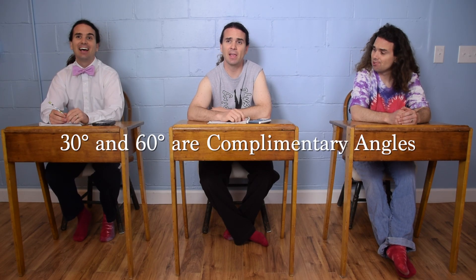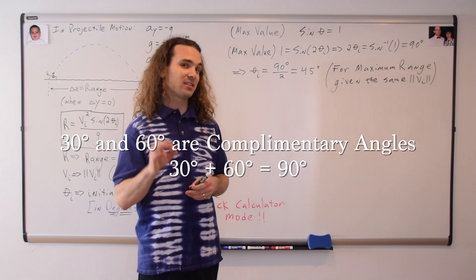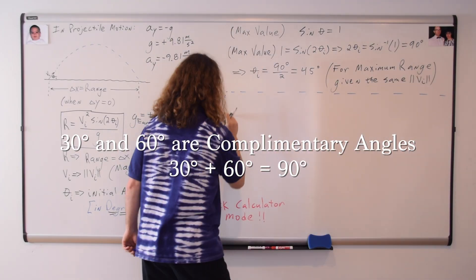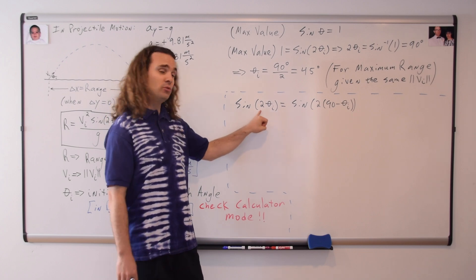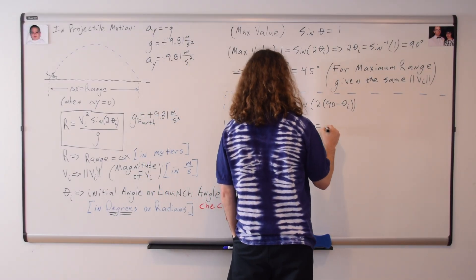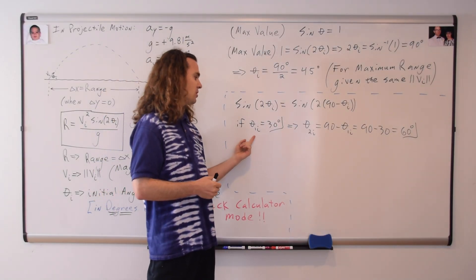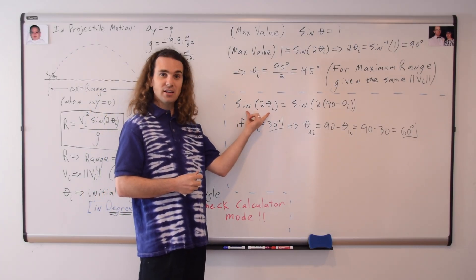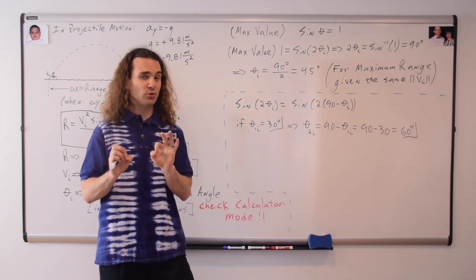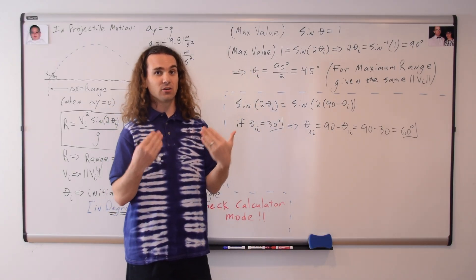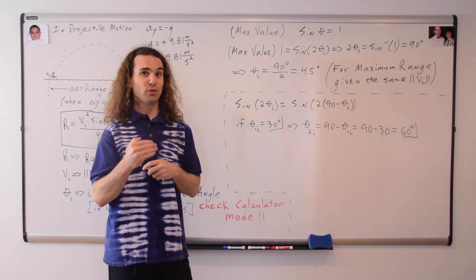Hold up — aren't 30 and 60 degrees called complementary angles? Yes, complementary angles, because they add up to 90 degrees. That is correct. Complementary angles are going to have the same range. Mathematically, the sine of two times the initial angle equals the sine of two times the quantity (90 minus the initial angle). For example, if we have a first launch angle of 30 degrees, a second launch angle that will give the same value for sine of two theta initial, and therefore the same range given the same magnitude initial velocity, is going to be 90 minus that first launch angle, or 90 minus 30, which is 60 degrees — exactly what we got using the graph of sine two theta initial.